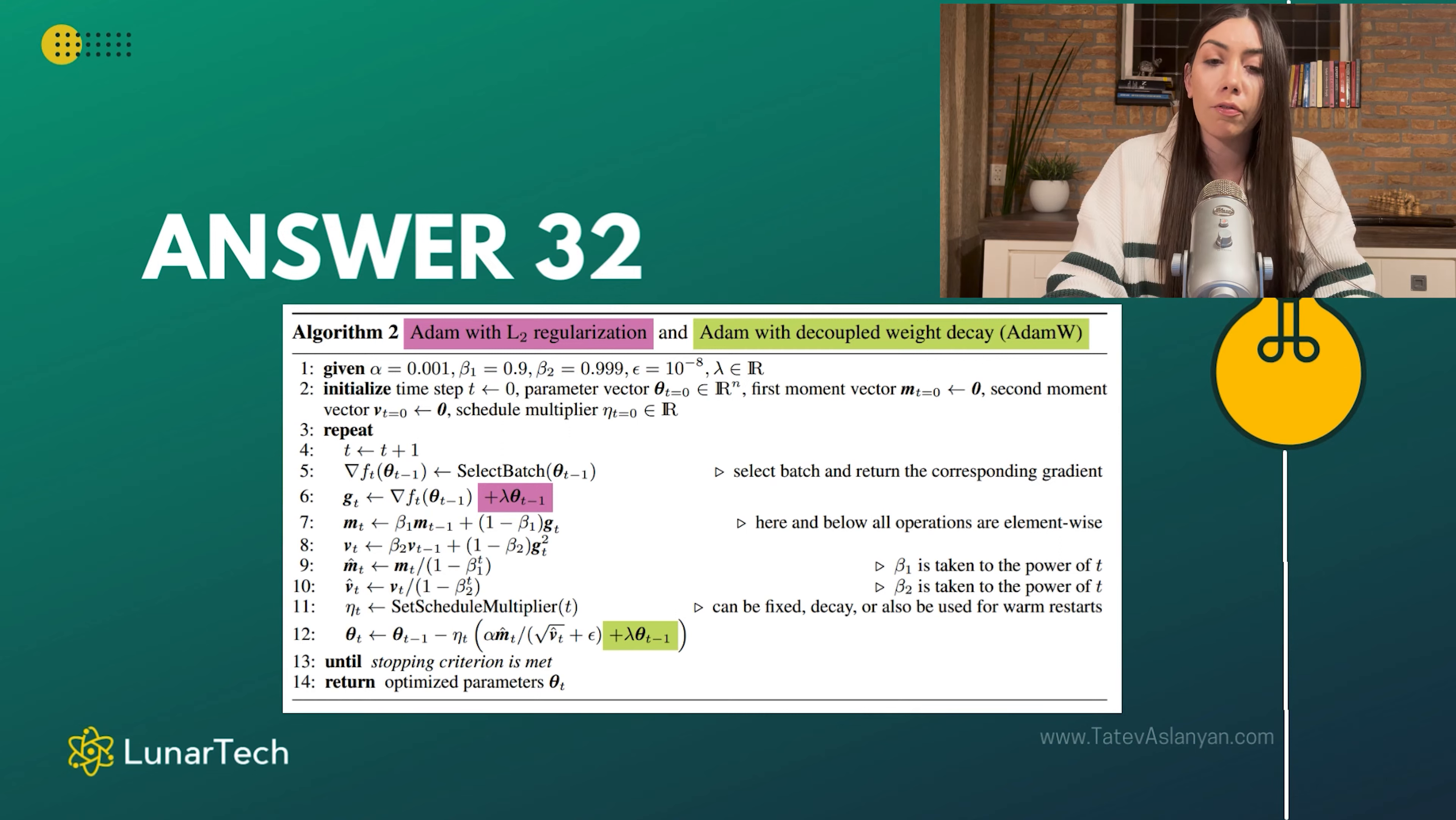then it has proven to have much better impact in terms of generalization of the model. So when we add this regularization term, lambda multiplied by theta_t-1, not to the gradient but we add it directly when updating the model parameter as part of this entire expression, as you can see, multiplied with the learning rate, then this has shown to have much better impact in terms of solving the overfitting problem and making the entire trained model more generalizable, which will then ensure that we have better performance in specific scenarios, especially when we have deep neural networks or when we are fine-tuning pre-trained models.